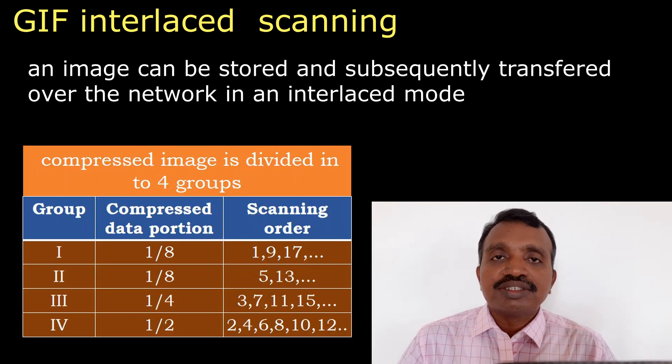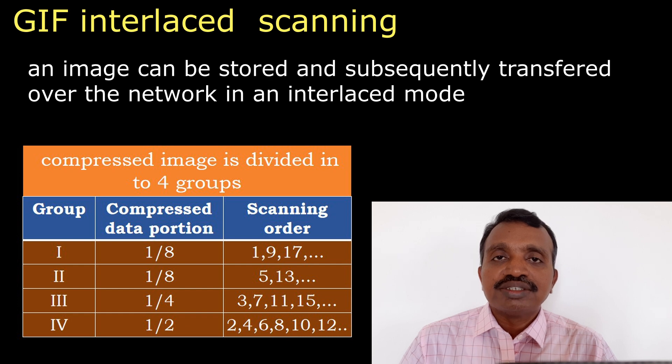Group 1 consists of 1 by 8th of the compressed data. Group 2 consists of 1 by 8th of the compressed data. Group 3 consists of 1 4th of the compressed data. And group 4 consists of half of the compressed data.